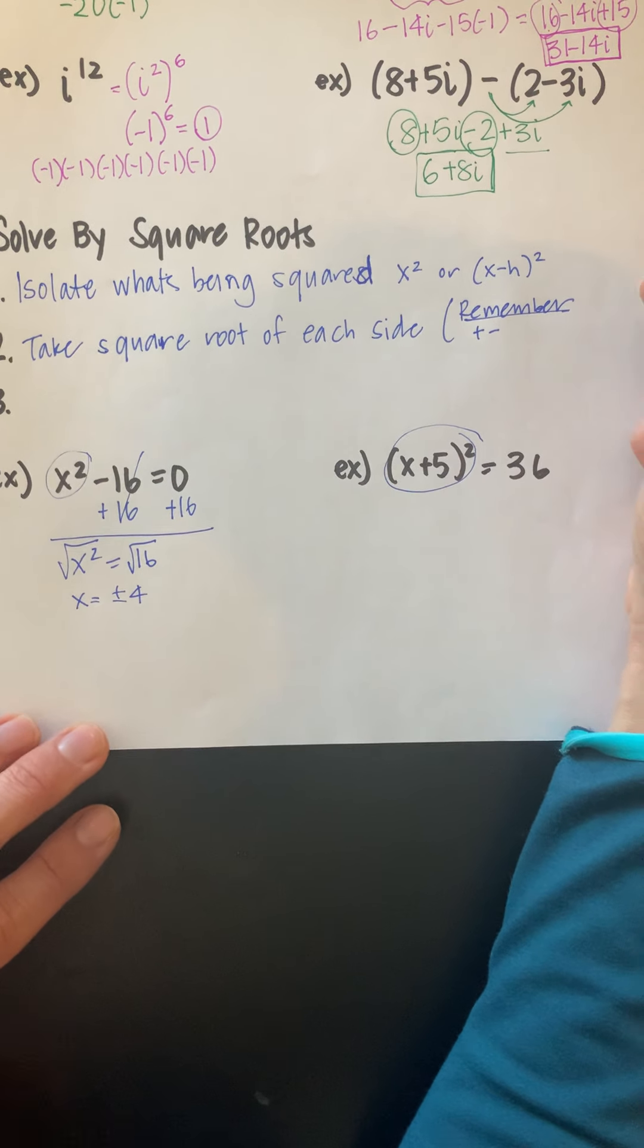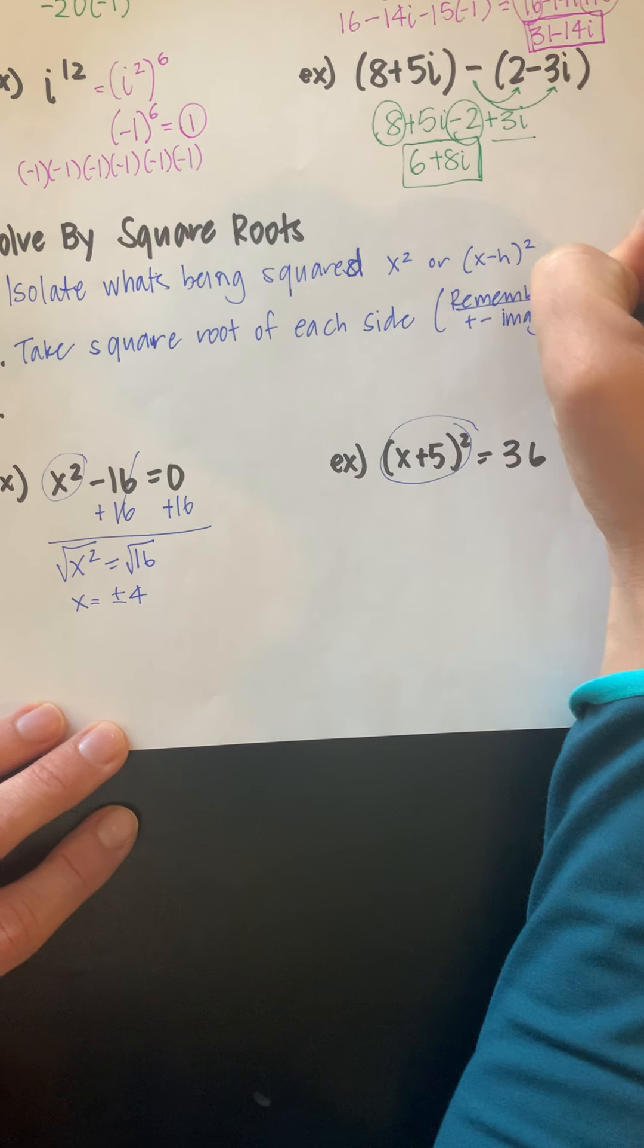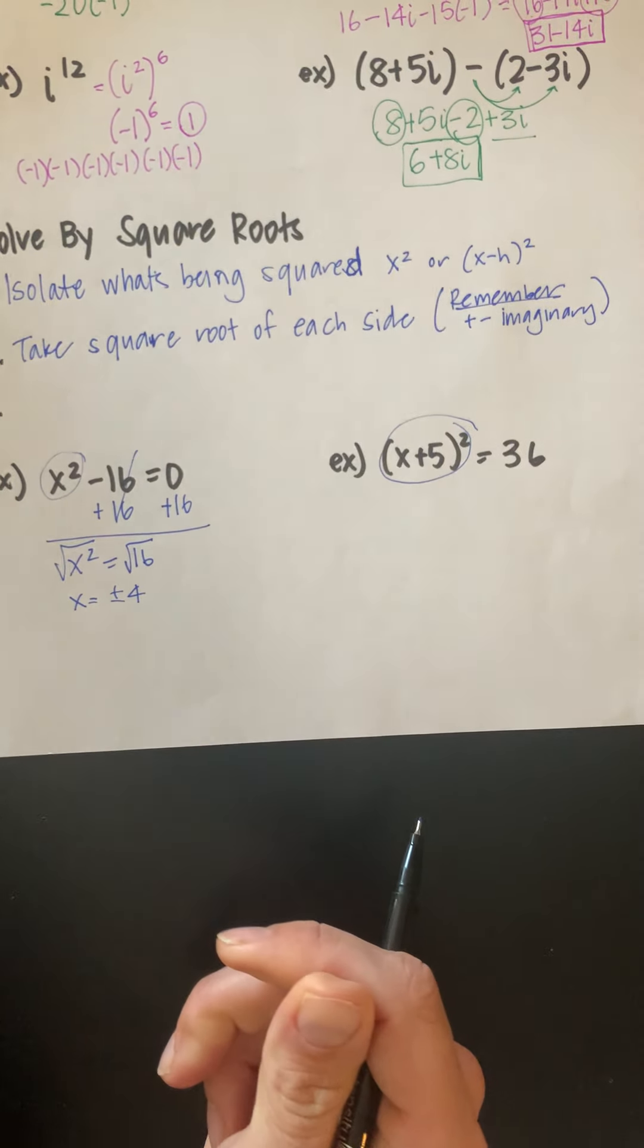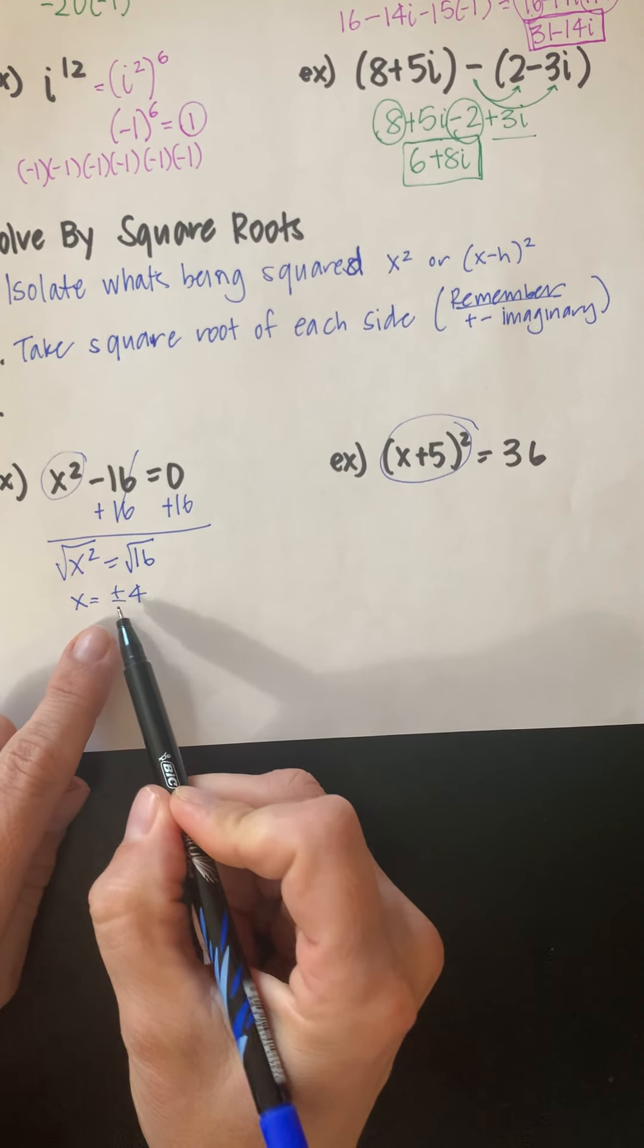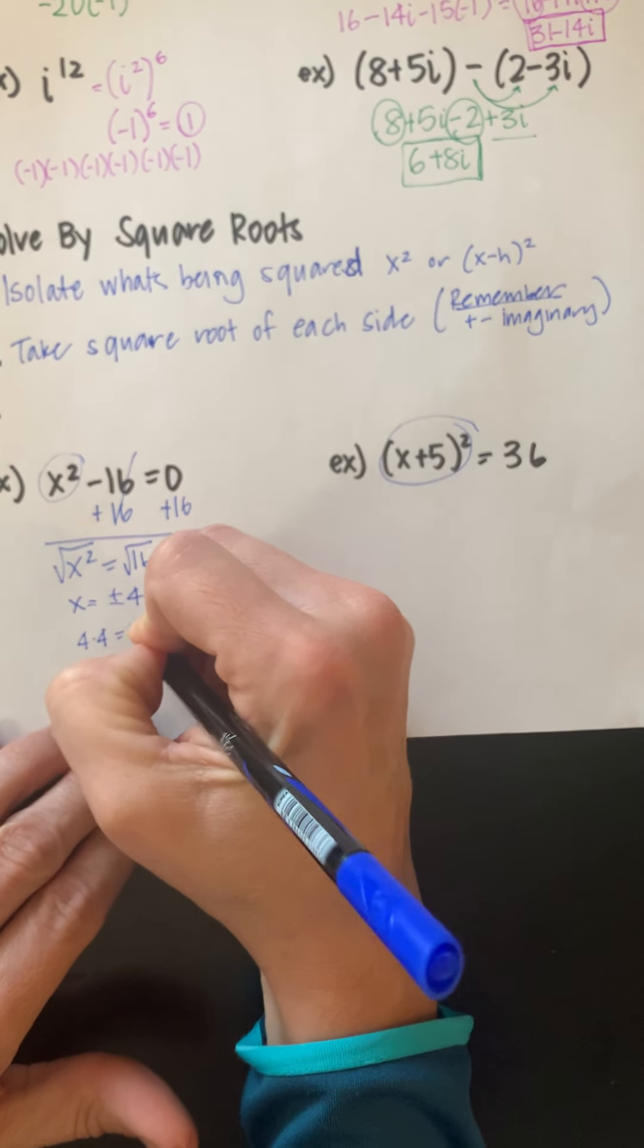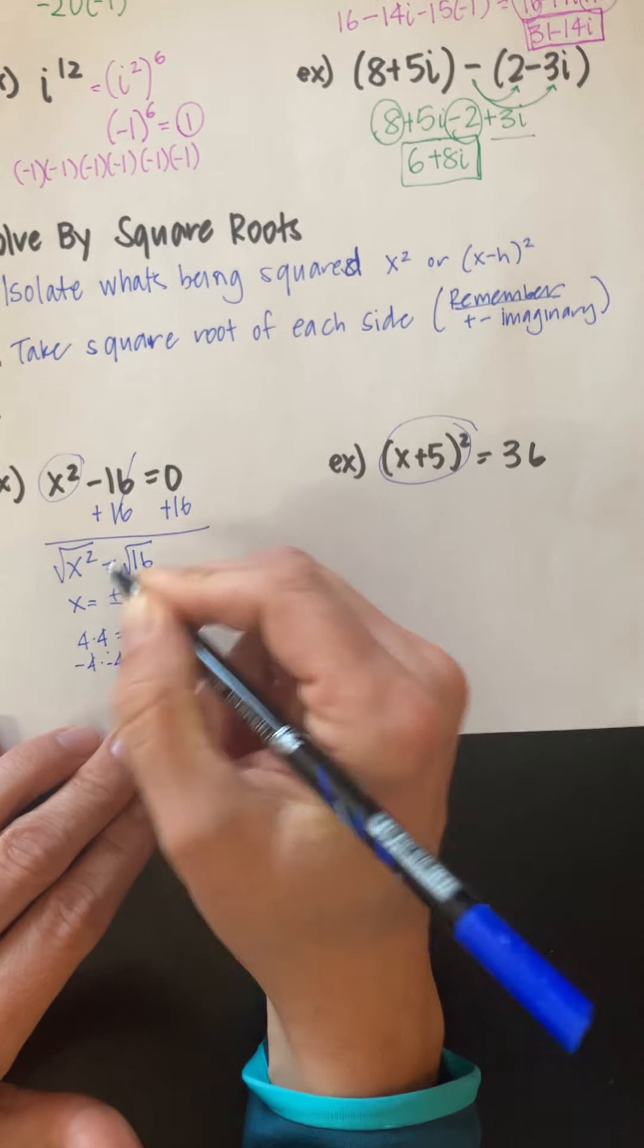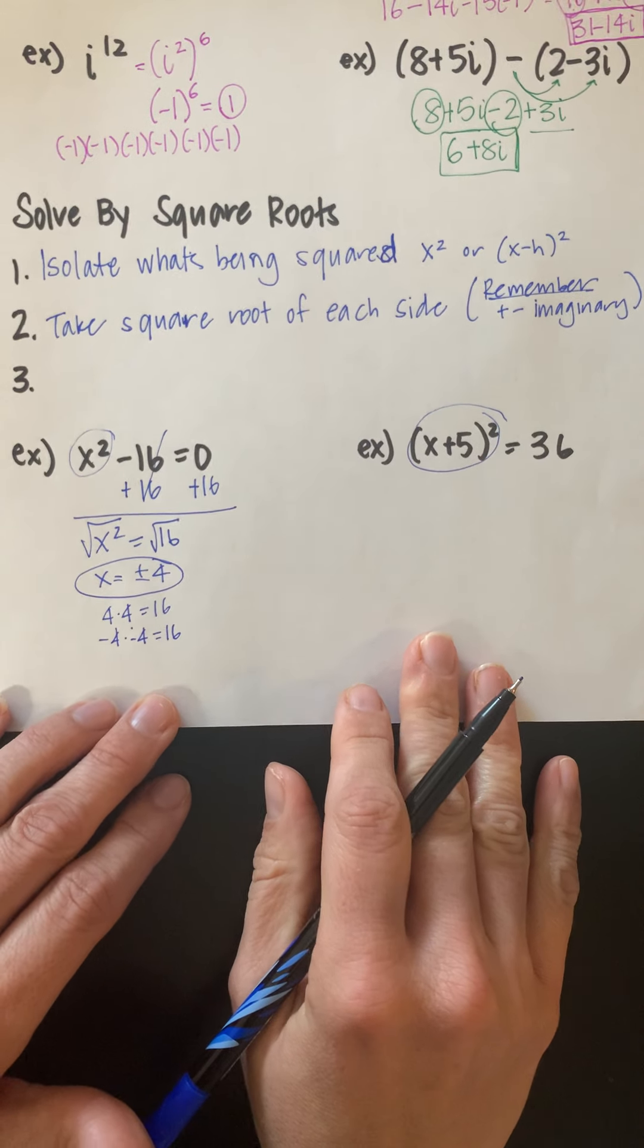So remember positive and negative. Also remember if there needs to be an imaginary solution. That happens when you take the square root of a negative. So the plus or minus comes from the fact that 4 times 4 is 16, but also negative 4 times negative 4 is also positive 16. So both answers have to be included here.